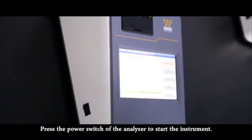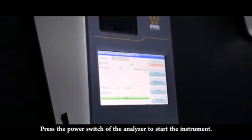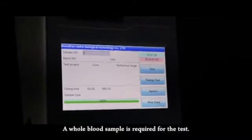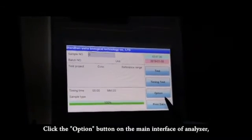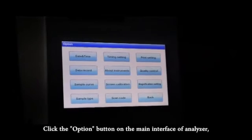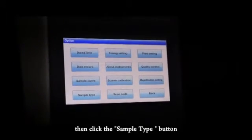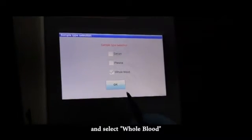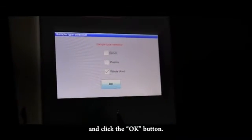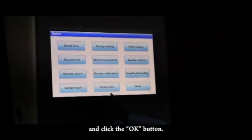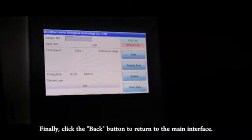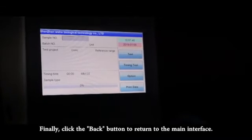Press the power switch of the analyzer to start the instrument. A whole blood sample is required for the test. Click the option button on the main interface of analyzer. Then click the sample type button and select whole blood and click the OK button. Finally, click the back button to return to the main interface.